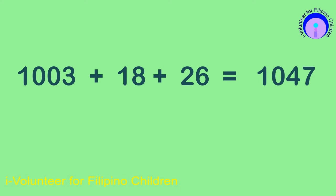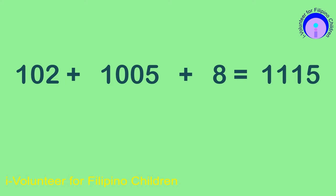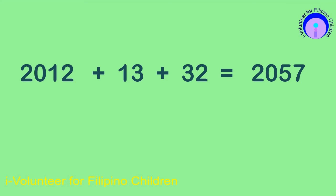1,003 plus 18 plus 26 is equal to 1,047. 102 plus 1,005 plus 8 is equal to 1,116. 2,012 plus 13 plus 32 is equal to 2,057.